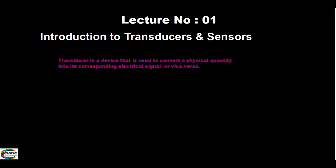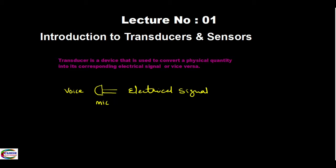For example, if you have a microphone, it acts as an input transducer — our voice is converted to an electrical signal. The mic converts mechanical vibrations to an electrical signal. Similarly, a speaker is also a transducer, but it converts electrical energy into sound energy. So a transducer converts a physical quantity to an electrical quantity, or an electrical quantity to another physical quantity — that is, a transfer of energy from one form to another.